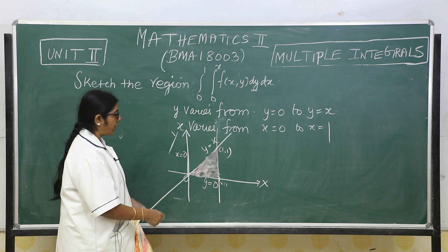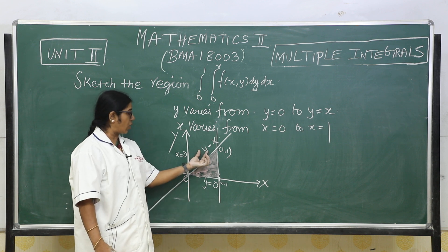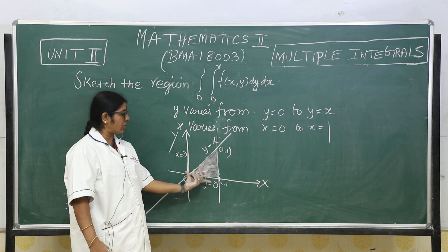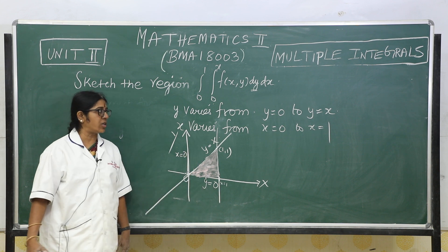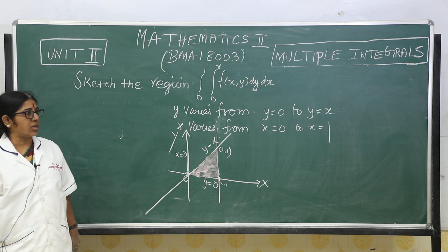So it is bounded between y equal to 0, y equal to x. This is the point x equal to 0 and this is the point x equal to 1. This is the region which we wanted, sketching the region. We will have to neatly sketch it.